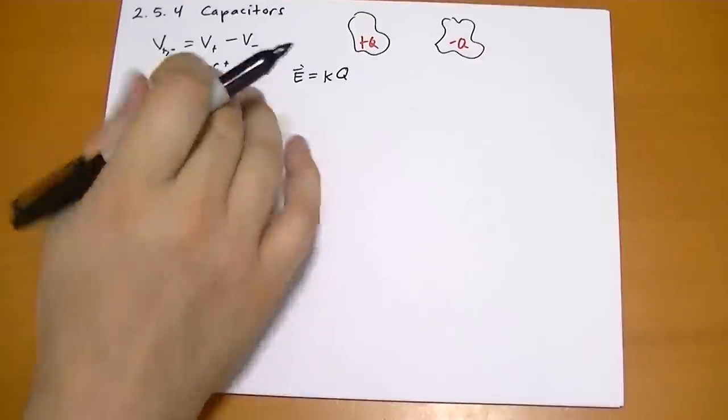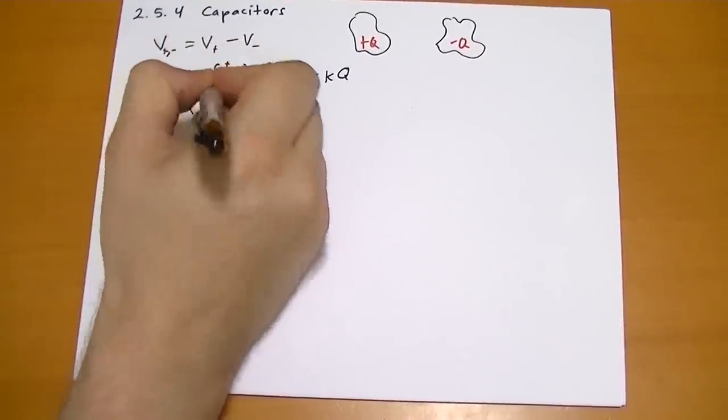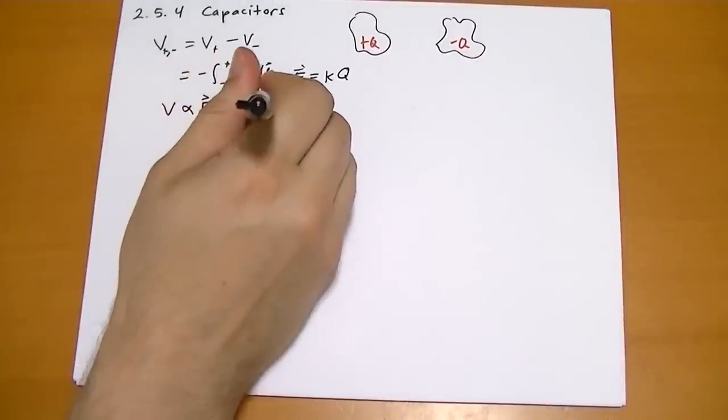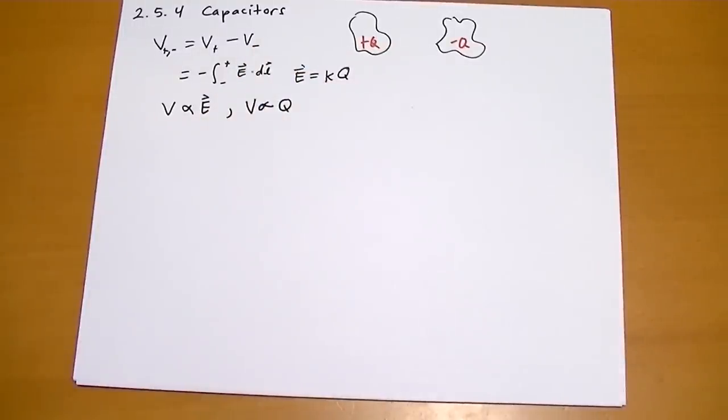So the potential, it turns out, is also proportional to the electric field. So that turns out that the potential is proportional to the charge on one of the positive plates.